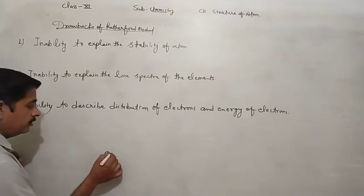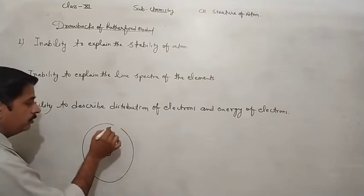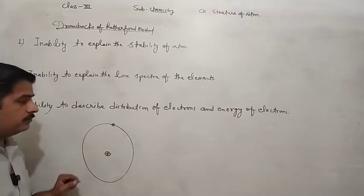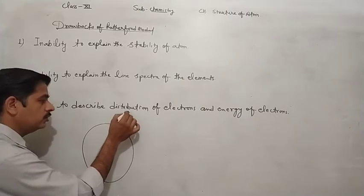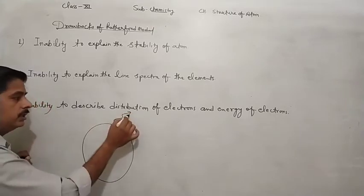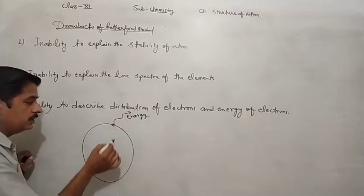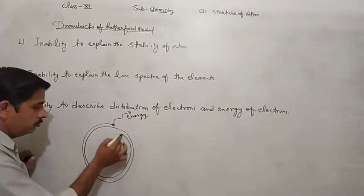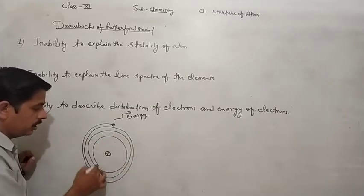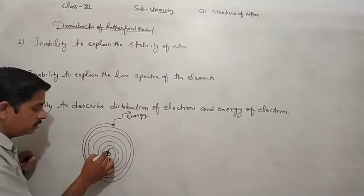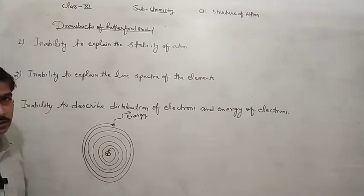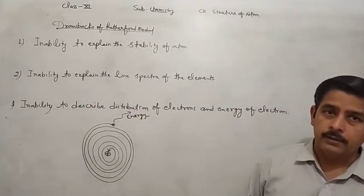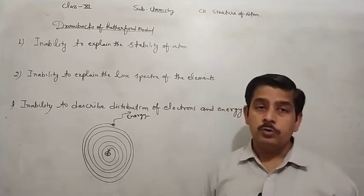Consider this: the nucleus is at the center, and the electron is revolving in a particular orbit around it. As the electron emits radiation and loses energy, its orbit becomes smaller and smaller, and eventually the electron should spiral into the nucleus. But this does not actually happen — atoms are stable.